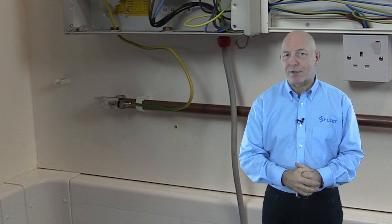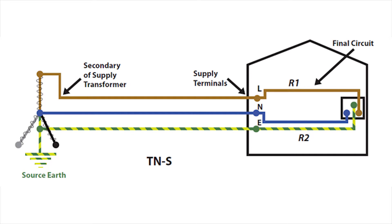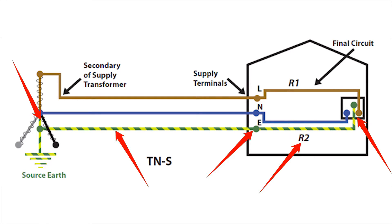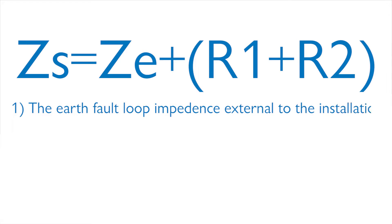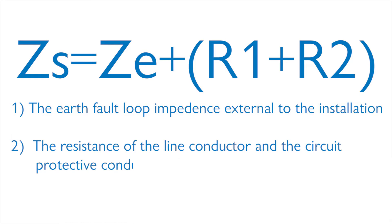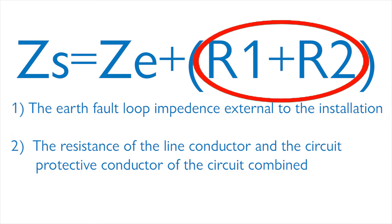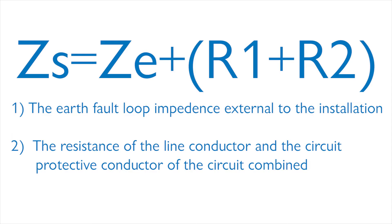The earth fault loop impedance comprises the point of a fault, the circuit protective conductor, the consumer's earth terminal and earthing conductor. For TN earthing systems, this also includes the metallic return path provided within the distributor's supply cable, the path through the earth neutral point of the distributor's transformer, the transformer winding, and the line conductor from the transformer to the point of the fault. The earth fault loop impedance comprises two parts: one, the earth fault loop impedance external to the installation, known as ZE; and secondly, the resistance of the line conductor and the resistance of the circuit protective conductor combined, R1 plus R2. The earth fault loop impedance can therefore be calculated using the formula ZS = ZE + R1 + R2.